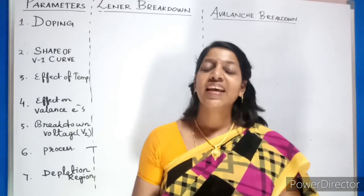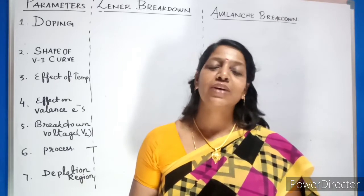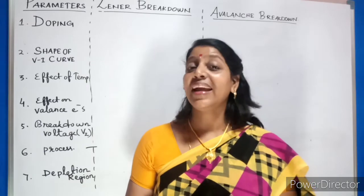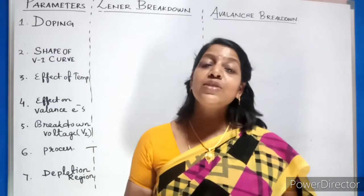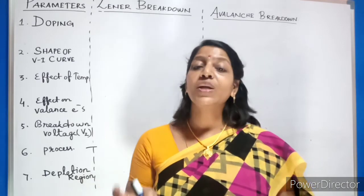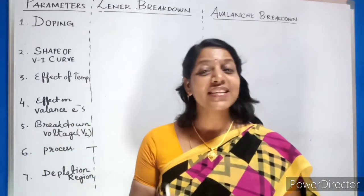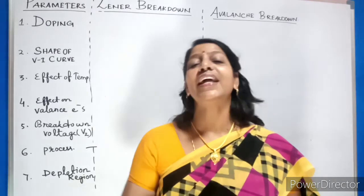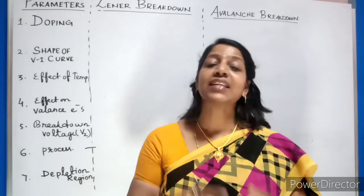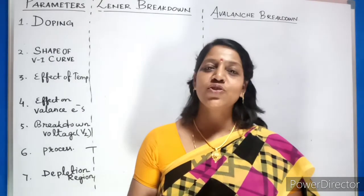This concept is called impact ionization. In objective questions they often ask: does impact ionization occur in Zener breakdown or avalanche breakdown? Impact ionization occurs in avalanche breakdown — it is due to the collision of charge carriers caused by the applied voltage. Zener breakdown, on the other hand, occurs due to the heavy electric field at the junction and the breakage of covalent bonds. This is the conceptual difference between the two.